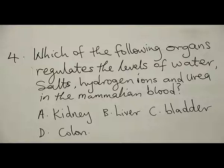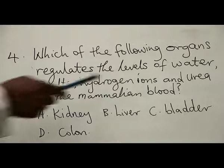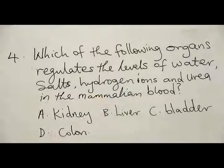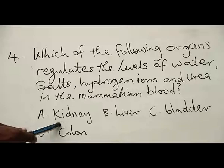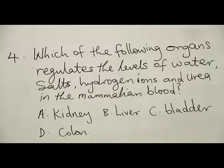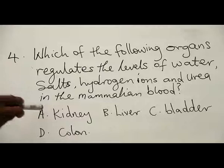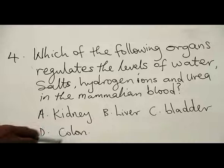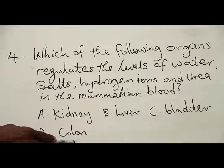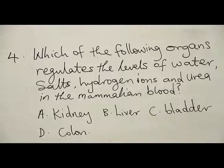Number four: which of the following organs regulates the level of water, salts, hydrogen ions, and urea in mammalian blood? A, kidney; B, liver; C, bladder; and D, colon. We are looking for the organ that regulates water level in the blood, the salt concentration, hydrogen ions, and urea. The colon is part of the large intestine — its main function is reabsorption of water from the undigested solid waste.